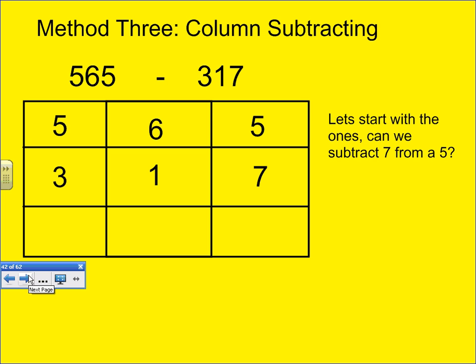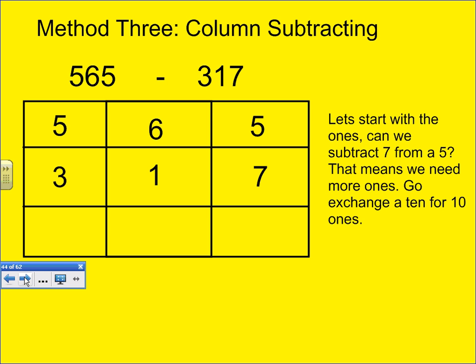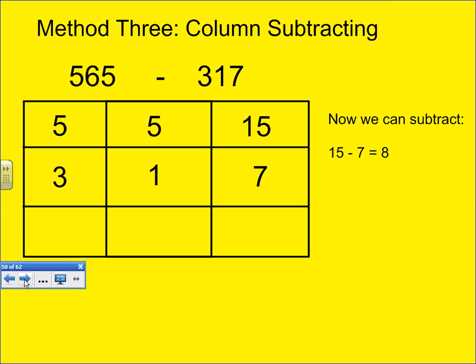Let's start with the ones. Can we subtract 7 from a 5? The answer to that is no, we cannot. So, I have to go over to the 10's, where the 6 is, and get one of the tens from the 6, and put it with the 5. So, here I'm separating the 6 into a 5 and a 1, and I'm moving that 10 over to the 5. So, now I have 10 and 5 in my ones column, which is 15, and now I have enough there that I can subtract the 7. And the 15 take away 7, which is 8.